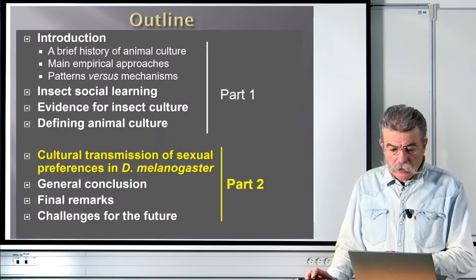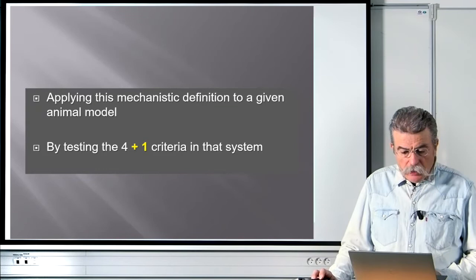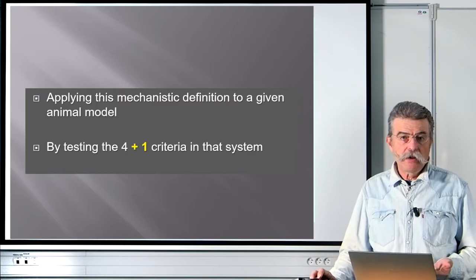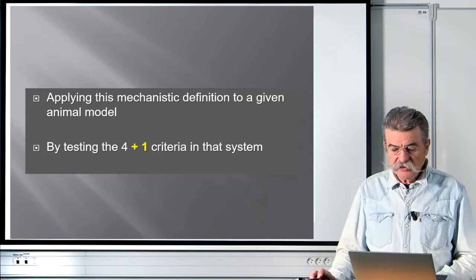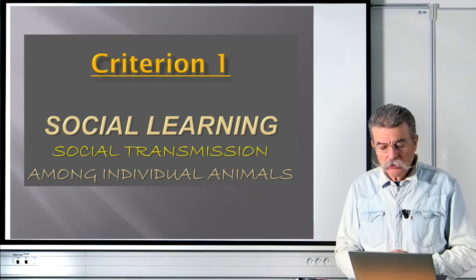In the second part of this lecture about insect culture, I want to focus on the case of the cultural transmission of sexual preferences in Drosophila melanogaster. At the end of the first part I proposed a mechanistic definition of animal culture, and said it was necessary to apply it to a given animal model by testing the 4 plus 1 criteria in that specific system. I now want to do this with Drosophila melanogaster by going through the different criteria one by one.